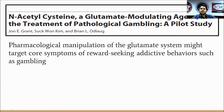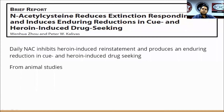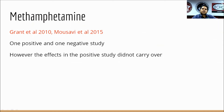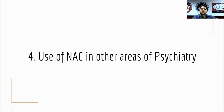N-acetylcysteine has been studied in behavioral addictions like pathological gambling, and preliminary research has shown that it reduces reward-seeking addictive behaviors. However, there are no well-systematized studies on this point. It has also been studied in heroin-induced drug-seeking, but most of this evidence is from animal studies and was not replicated in clinical samples. In methamphetamine, there was one positive and one negative study, but the positive effects were not carried forward over a study period of more than three months.